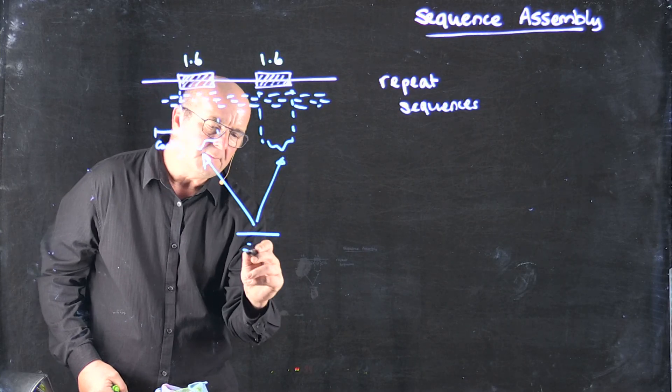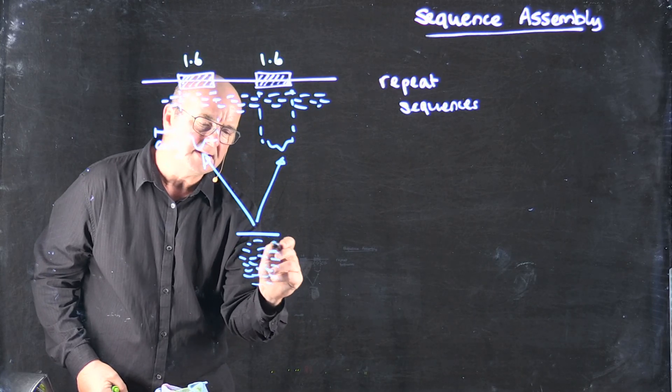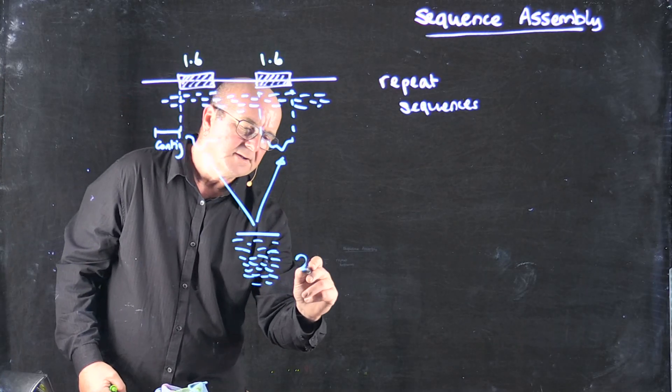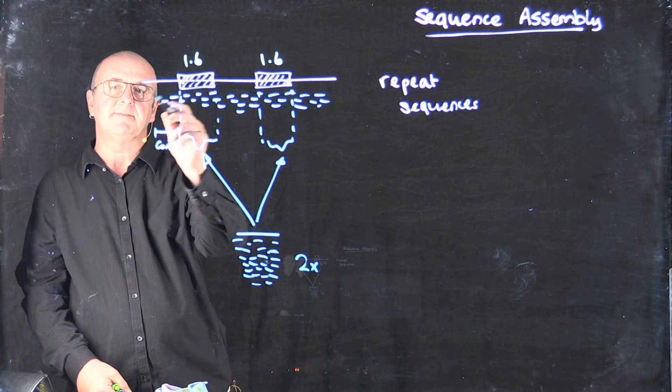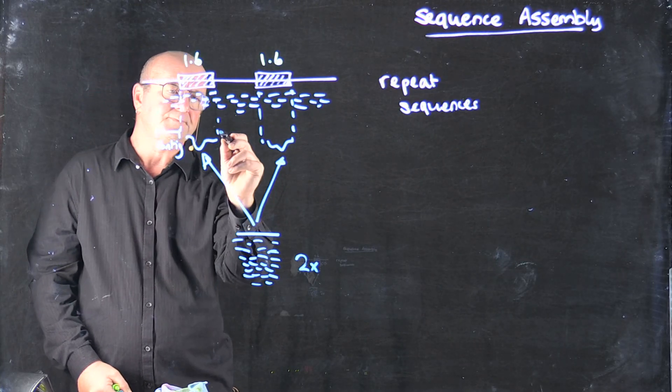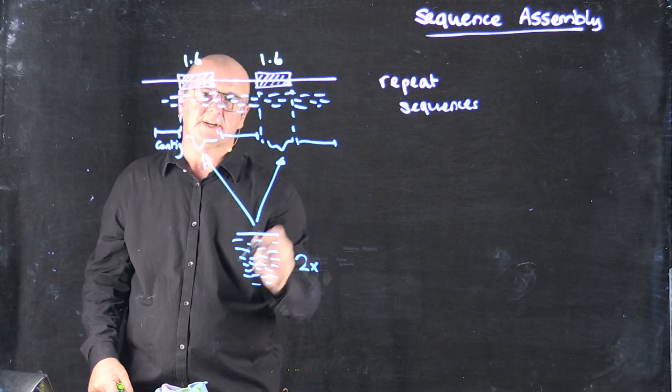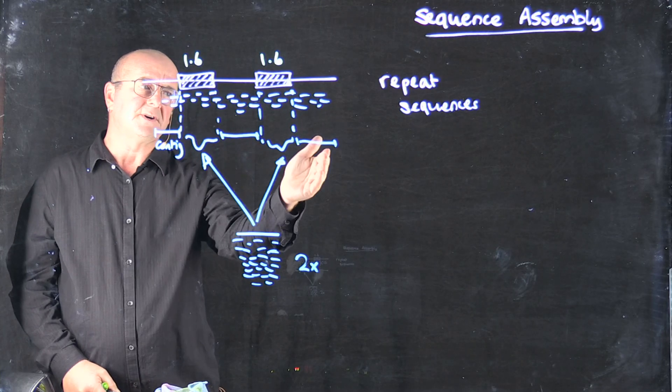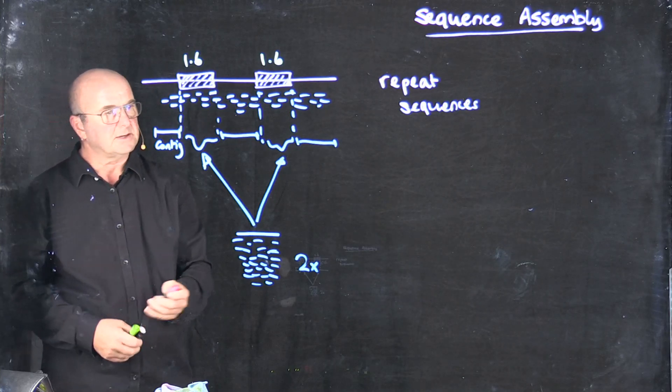But when we look at our average coverage, remember our coverage is how many individual reads we have at a position, we're going to have 2x the coverage of these regions as we have of the rest of the genome. We'll get another contig here and we'll get another contig here. So we'll typically end up with having 4 contigs, so 3 regular contigs plus a duplicate.